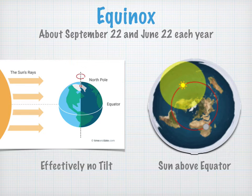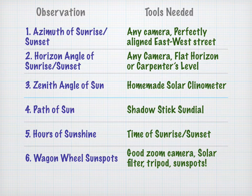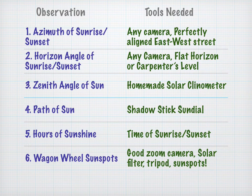The equinox happens twice a year, approximately September 22nd and June 22nd, every year. In this video series, we're going to cover six observations that you can make on the equinox.